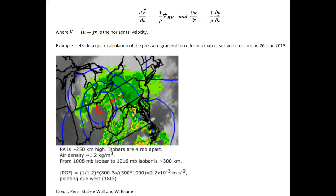To find the pressure gradient, we note that the height of Pennsylvania is about 250 kilometers, which is slightly smaller than the distance between the 1008 millibar and the 1016 millibar isobars, which is about 300 kilometers.